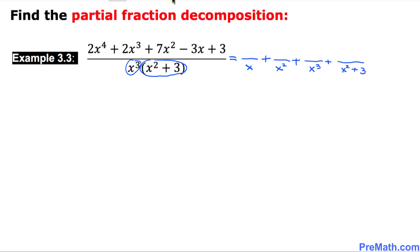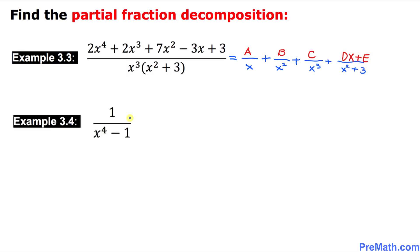Now let's take care of the numerators. Since the first three fractions are linear, I put simply constant A, then B, then C. For the fourth fraction, since it is quadratic, we have to be very careful — so that numerator becomes Dx + E. And here in our final example, we are going to take care of this one.